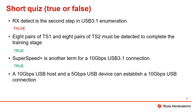Four: a 10 gigabits per second USB host and a 5 gigabit per second USB device can establish a 10 gigabit per second USB connection. This is false. In this scenario, the connection speed would be limited to 5 gigabits per second because that is the highest speed the USB device can support.